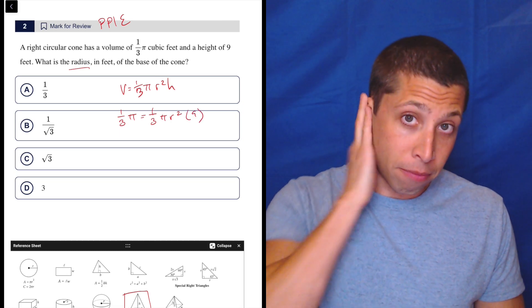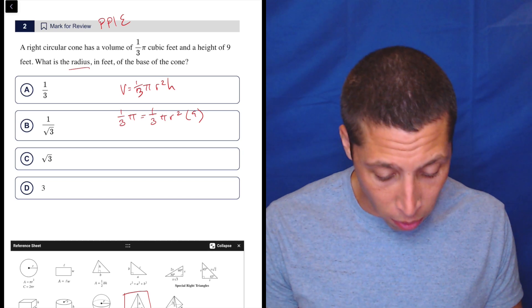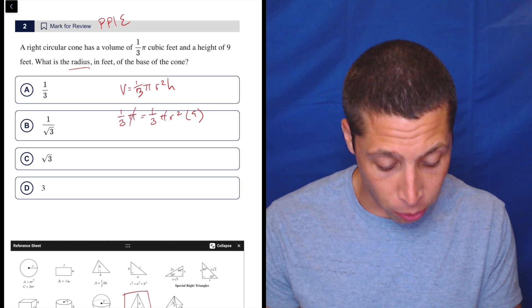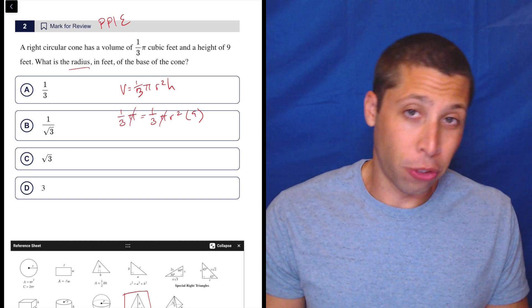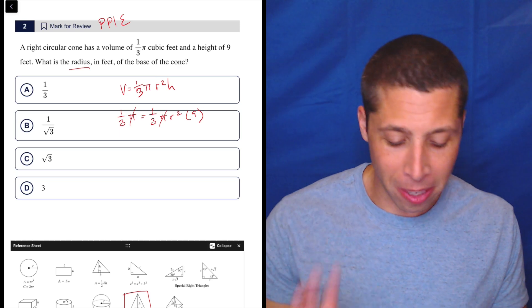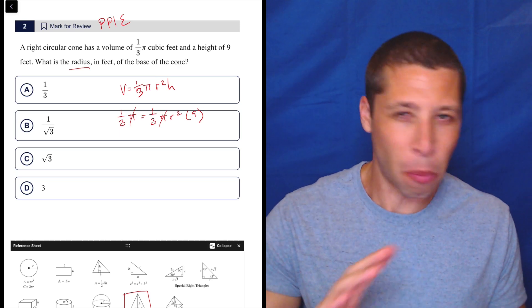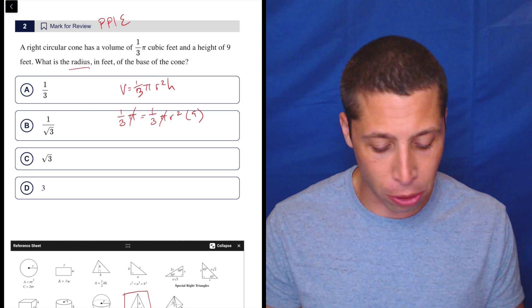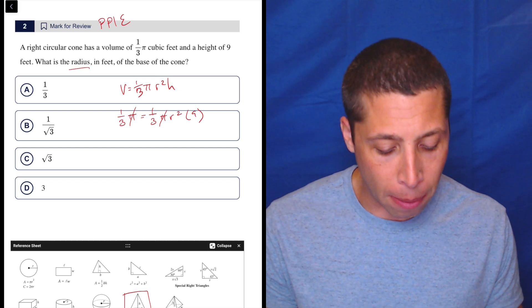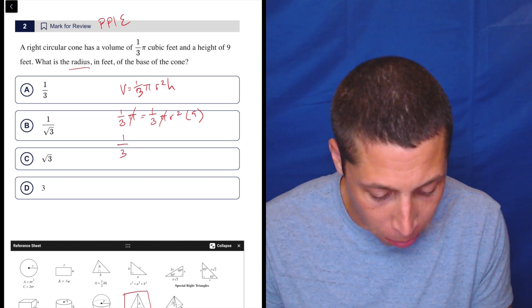So at this point, I would just kind of do some algebra here. One thing I would notice is let's get rid of the pies right away. The one thirds are also going to cancel out pretty nicely. But I worry that if we do that, we might kind of get confused about what we're left over with. So maybe a better thing to do is let's just multiply the right side.